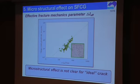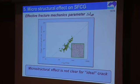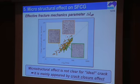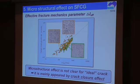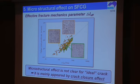Finally, I'd like to show the result using the effective fracture mechanics parameter ΔJ_eff. As you can see, all fatigue data are uniformly correlated by ΔJ_eff. These are data for different microstructures. Interestingly, although all microstructures are completely different, the microstructure effect is not clear in this evaluation. This evaluated result represents, in other words, the crack growth rate for an ideal crack. So, microstructure effect is not clear for an ideal crack in this study. In other words, the microstructure effect mainly appears through the crack closure effect. This is a rather important point of this presentation.